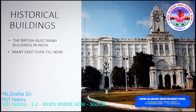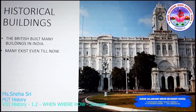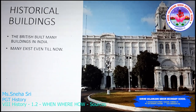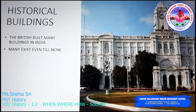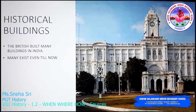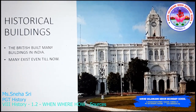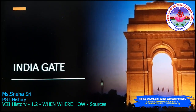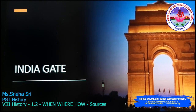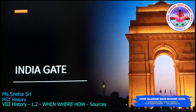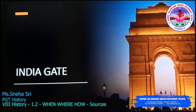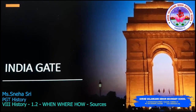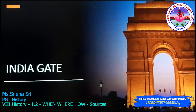The historical buildings — the British built many buildings in India for their needs, and those buildings exist even till now. On the screen you are able to see Fort St. George at Chennai, founded in the year 1644, which is the first British fortress in India. Also, the India Gate in Delhi is a war memorial for 70,000 soldiers who lost their lives serving in the British Indian Army during the First World War.